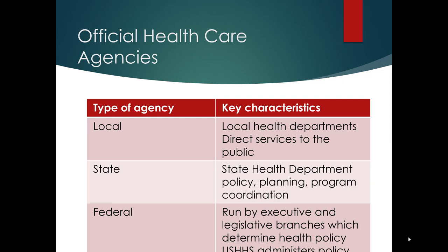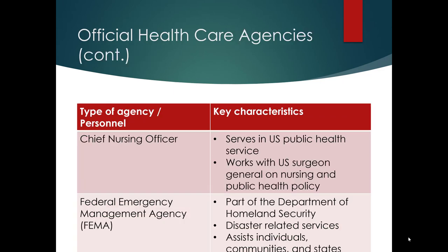Official health care agencies at the local level include local health departments, which provide direct services to the public. At the state level, the state health department is involved in policy planning and program coordination. At the federal level, run by executive and legislative branches, the government determines health policy, and the U.S. Health and Human Services Division administers policy. The chief nursing officer of the United States serves in the U.S. Public Health Service and works with the U.S. Surgeon General on nursing and public health policy. FEMA, part of the Department of Homeland Security, is involved in disaster-related services and assists individuals, communities, and states.